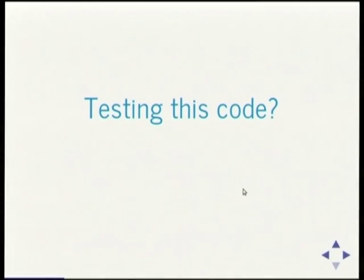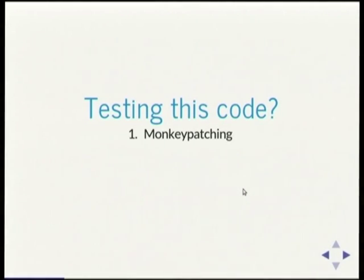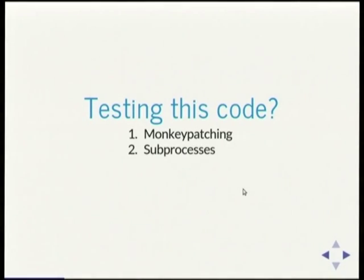Then Python exits and goes 'oh I've got a file descriptor here, I've got something in the buffer, I'll write that out' — it fails to write that, and then it starts to clean itself up. There's a bug in the interpreter. If you want to test this code and be confident, you have to run a separate process because you're testing something right at the boundary conditions, and that's just really ugly.